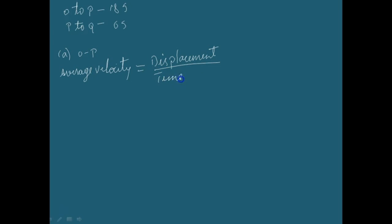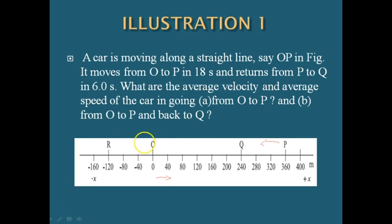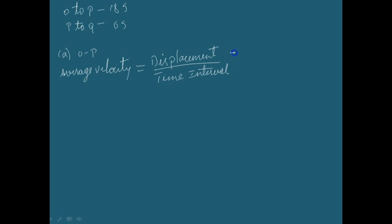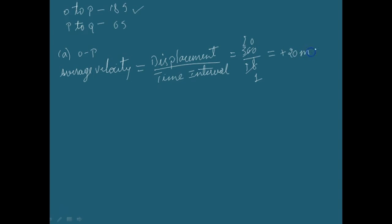We know that average velocity is nothing but displacement divided by time interval. The distance from O to P, as you can see in this figure, is 360 meters. The time interval is given in the question as 18 seconds. So the average velocity is plus 20 meters per second.